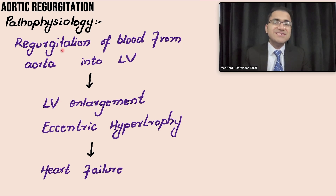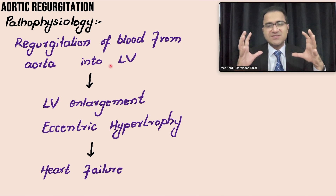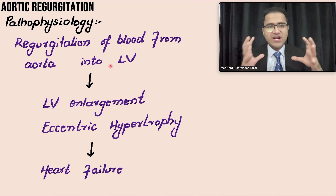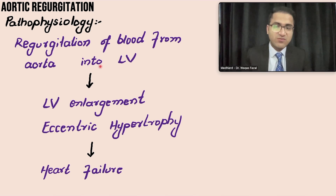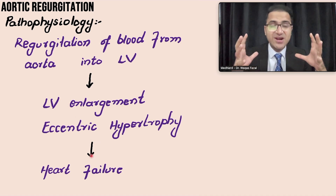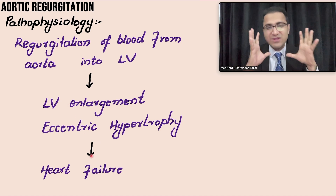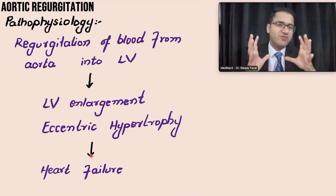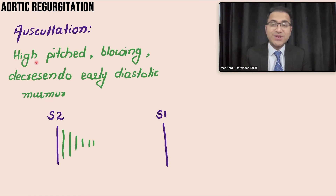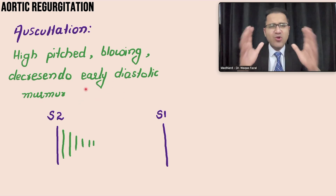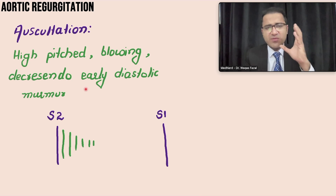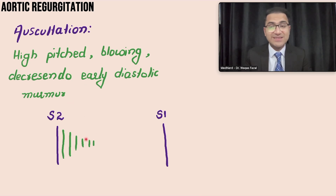Whenever there is regurgitation of blood from the aorta into the left ventricle, to make space for this extra blood, dilated cardiomyopathy occurs, with left ventricular enlargement and eccentric hypertrophy. Over a long period of time, these patients develop heart failure. On auscultation, you would hear a high-pitched, blowing, decrescendo early diastolic murmur — very prominent in diastole.